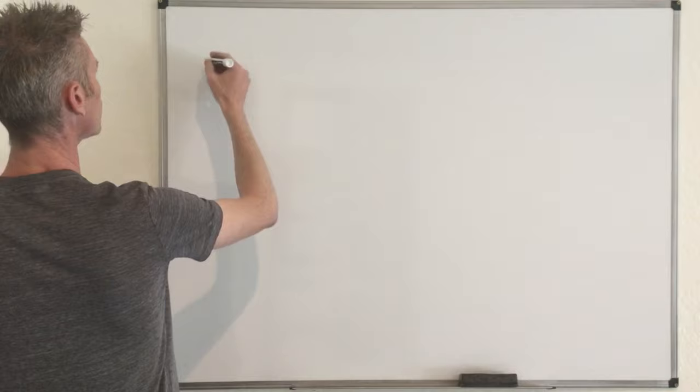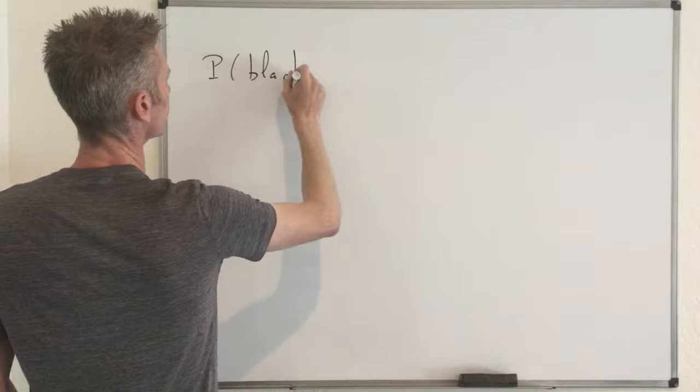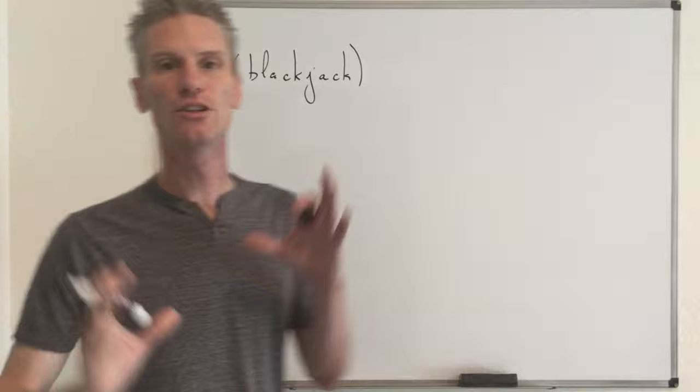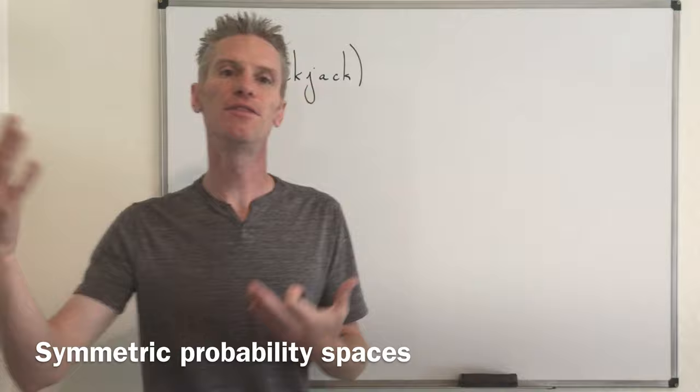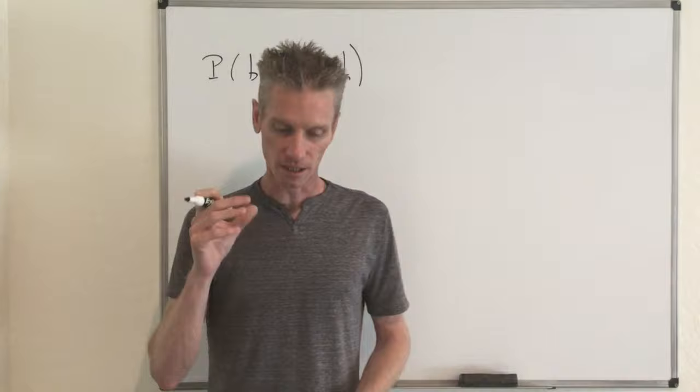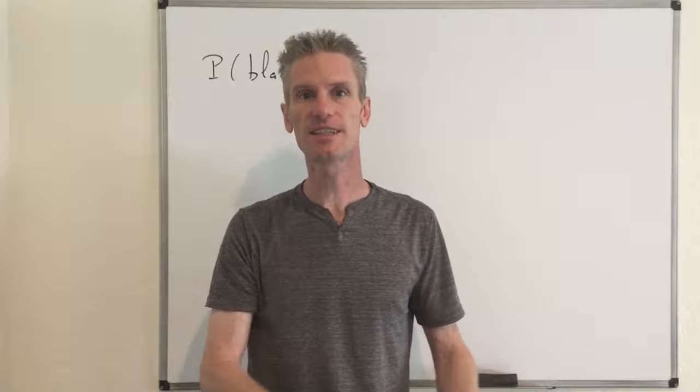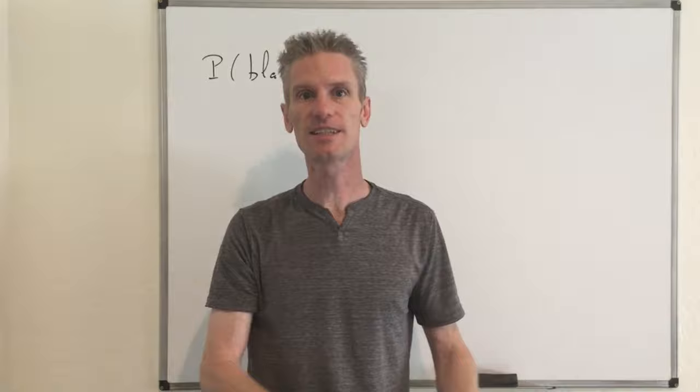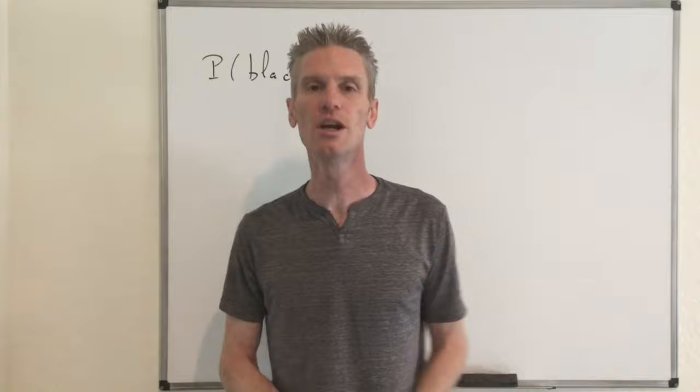We are again in the setting of symmetric probability spaces. We assume the deck of 52 cards is well mixed, so any two cards you can choose are equally likely. That means the probability of a blackjack is equal to the total number of blackjacks divided by the total number of ways you can take two cards from a deck of 52.